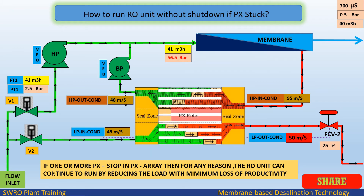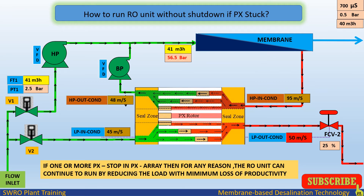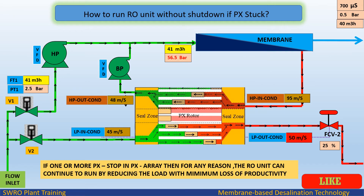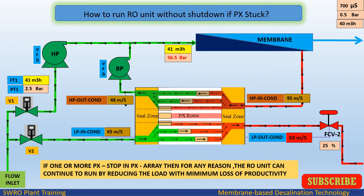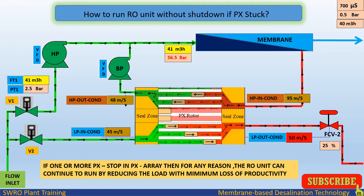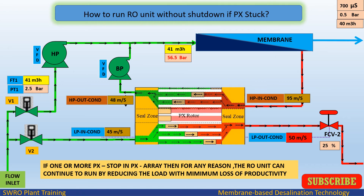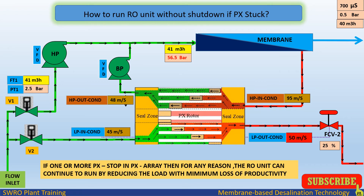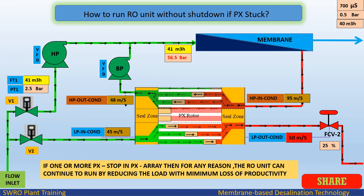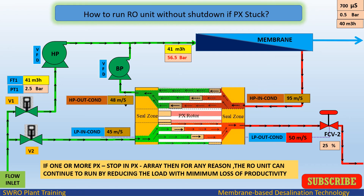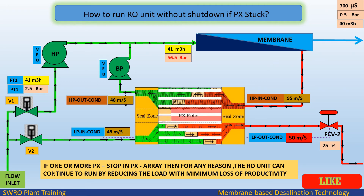How to run the RO unit without shutdown if PX is stuck: if one or more PX stop in the PX array for any reason, the RO unit can continue to run by reducing the load with minimum loss of productivity.